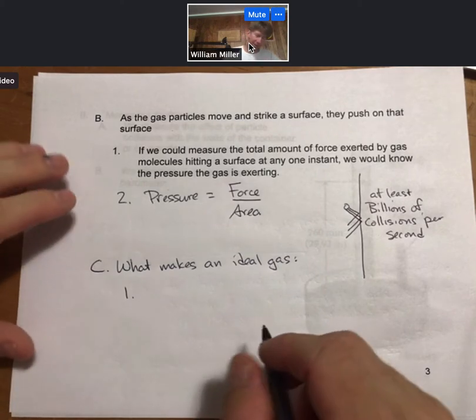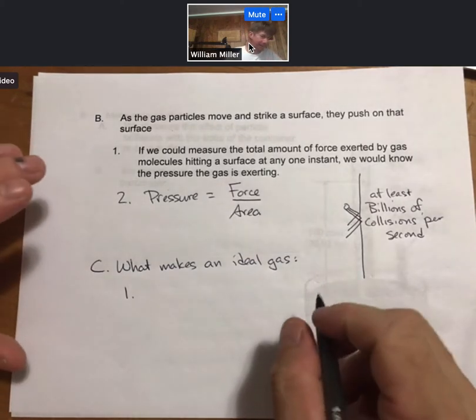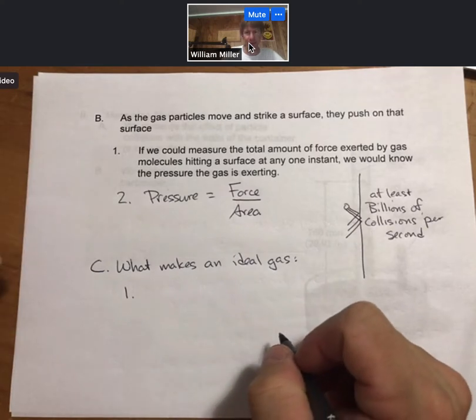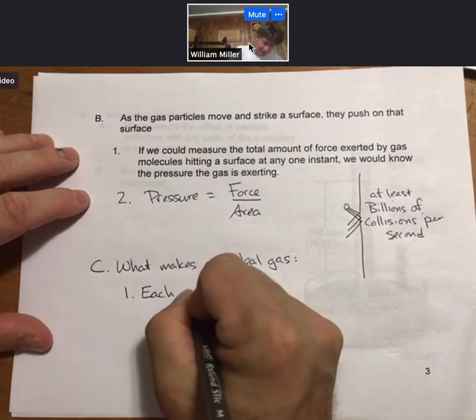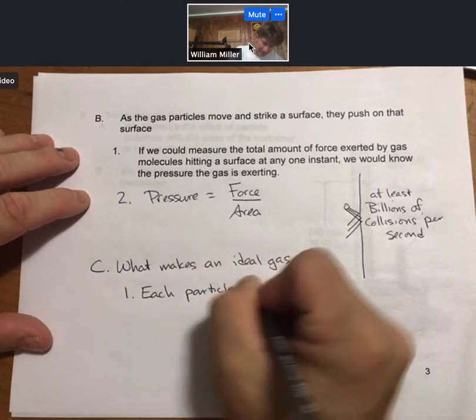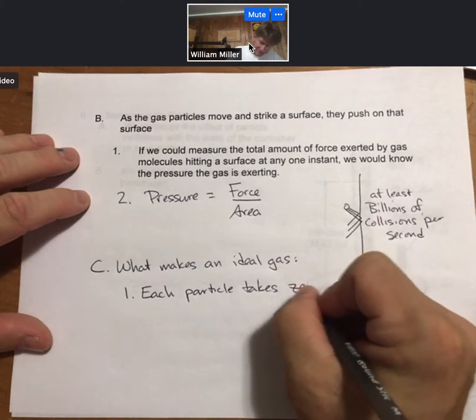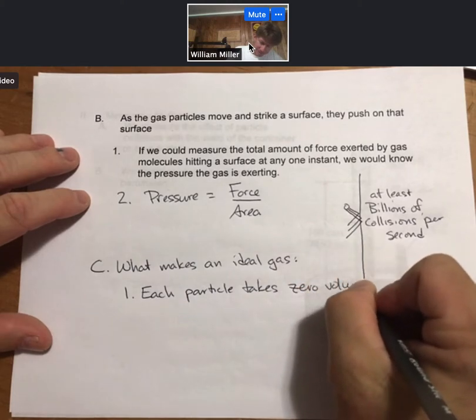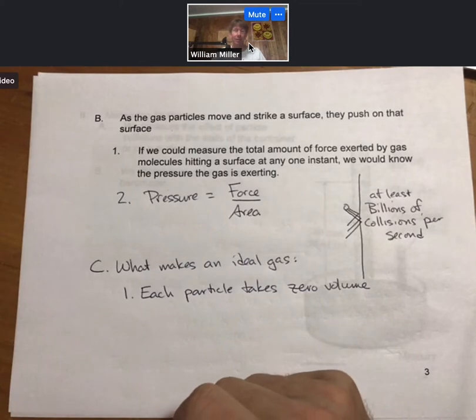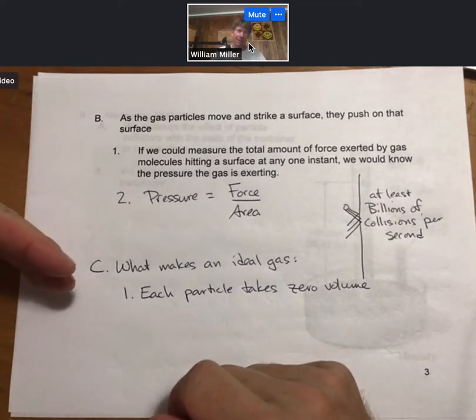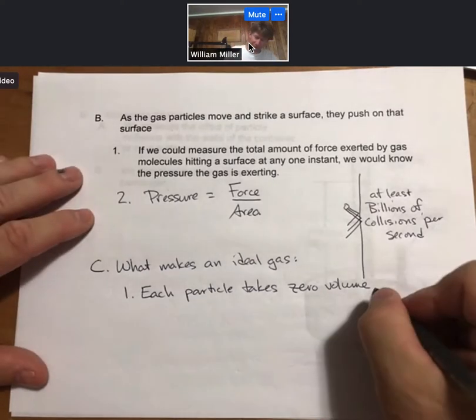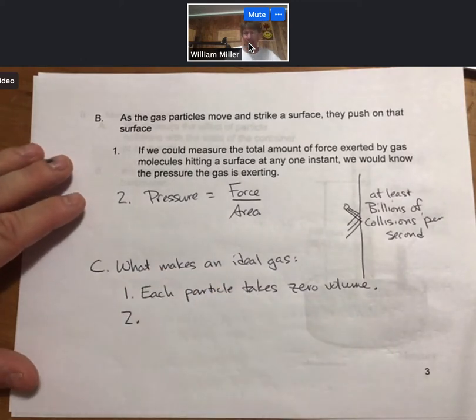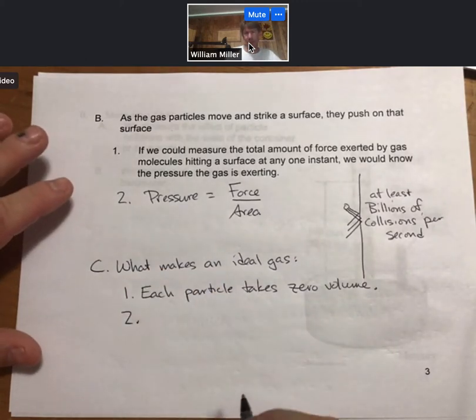So the first thing is for an ideal gas, each particle takes zero volume. And on the last page we talked about how each particle takes a very tiny amount of the volume of the container. But in the limit of an ideal gas each particle takes zero volume.